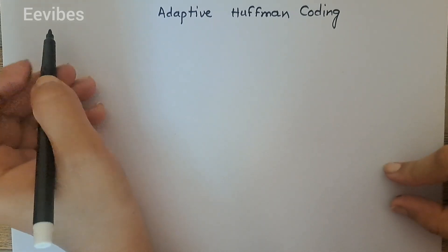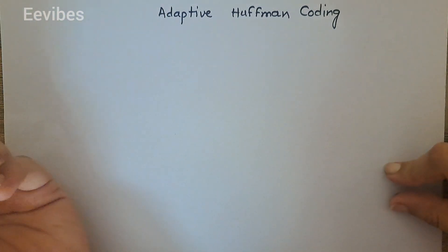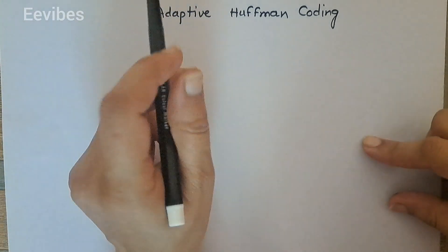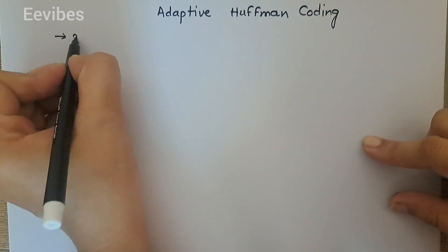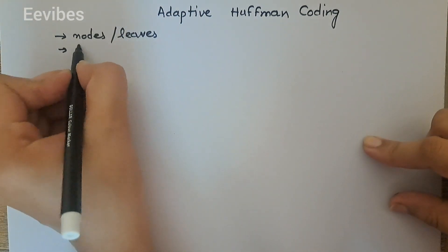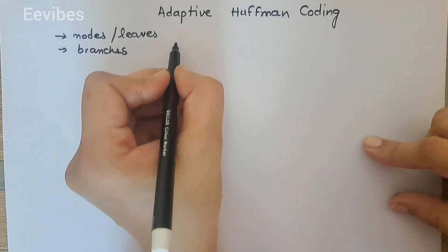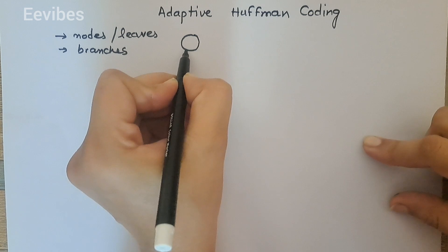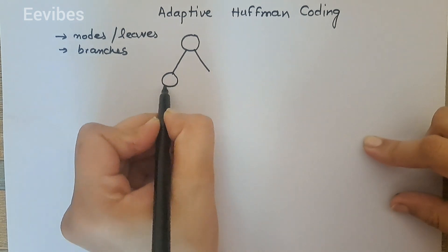Hi everyone, this is Asma Mushtaq from Double Vibes. In this video lecture I am going to explain what is the adaptive Huffman coding scheme and how we can use it for coding a particular sequence of symbols. In the Huffman coding scheme, we construct a binary tree which consists of nodes, also called leaves, and branches — it is only a binary tree which basically consists of two branches, so here is the root and from that we generate the branches.